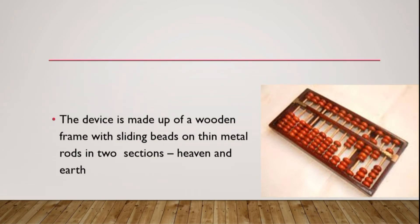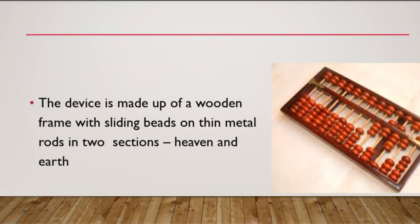The abacus has two sections. A horizontal crossbar perpendicular to the boards separates the abacus into two unequal parts. The beads above the crossbar are called the heaven beads and those below the crossbar are called the earth beads. Each heaven bead has a value of five times that of the earth bead below.